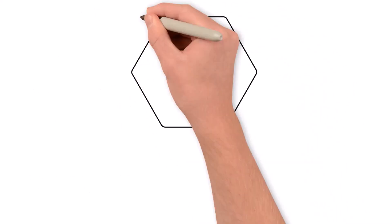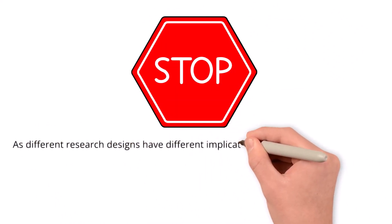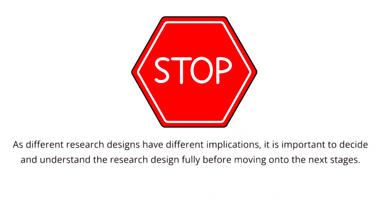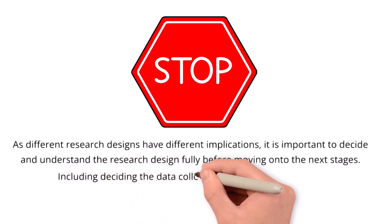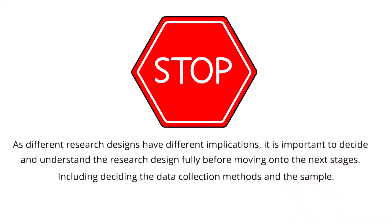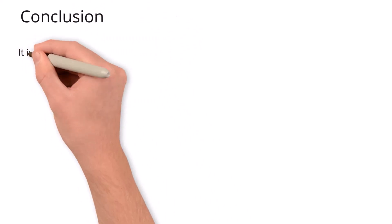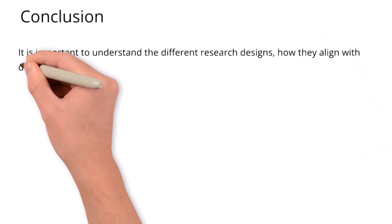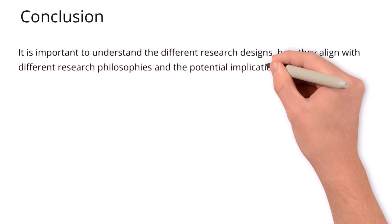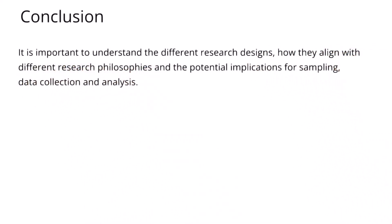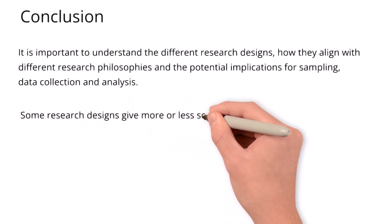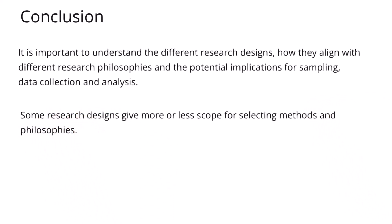As different research designs have different implications for your research, it's important to fully decide and understand your research design before moving on to selecting your data collection methods and deciding upon your sample. To conclude, it's important to understand the different research designs, how they align with different research philosophies, and the potential implications for sampling, data collection, and analysis. Some research designs give more or less scope for selecting methods and philosophies, so if selecting one with more scope, it's important to be able to justify those decisions.